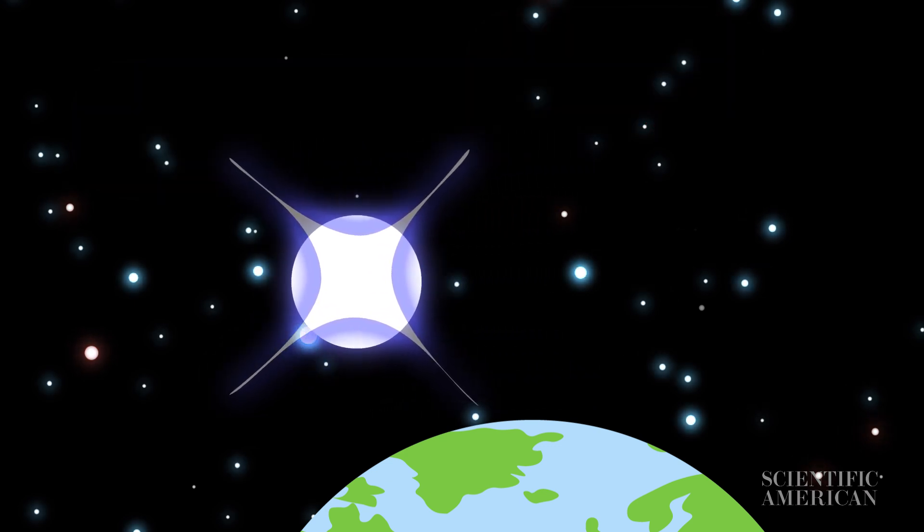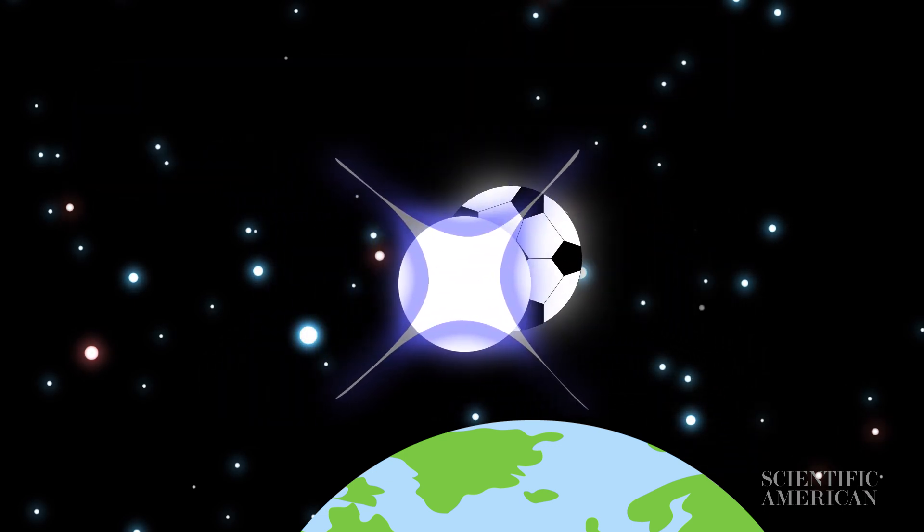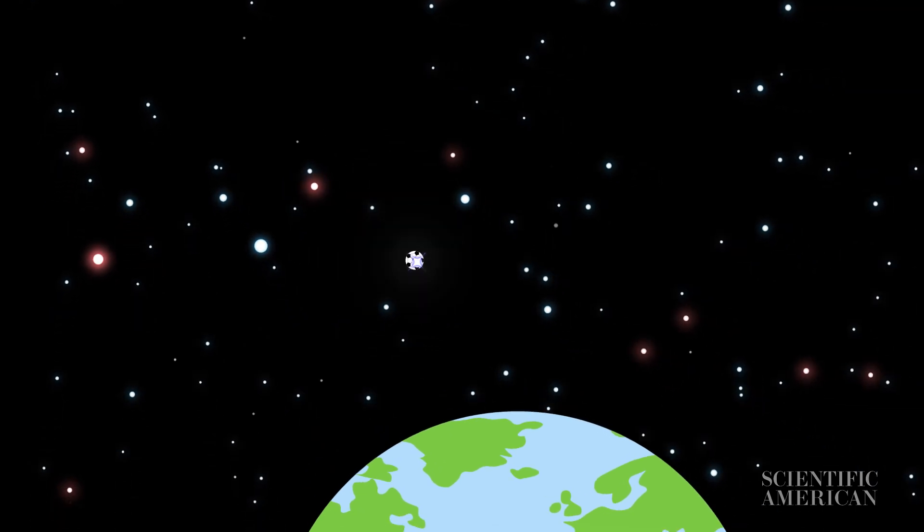The shifting is incredibly tiny. The closest star to our sun moves no more than the width of a soccer ball seen from 40 miles away.